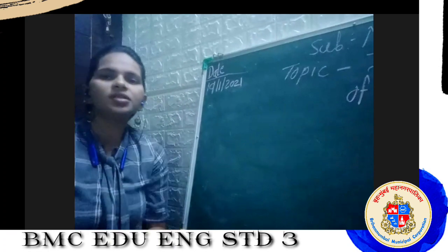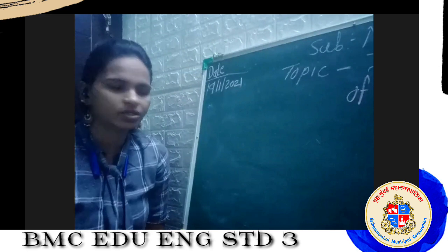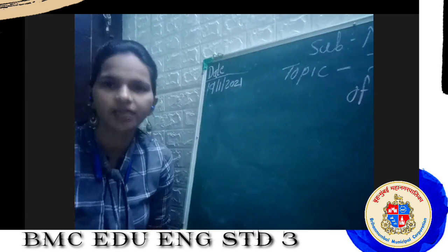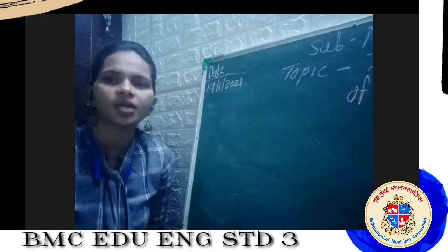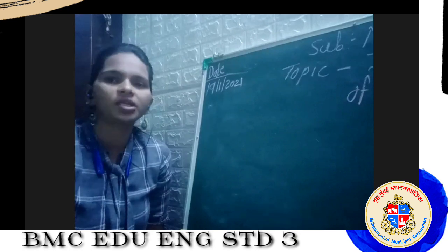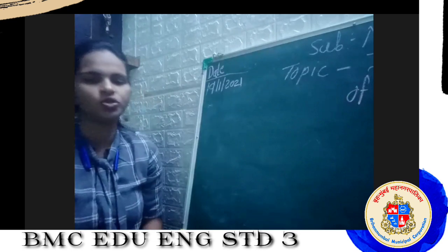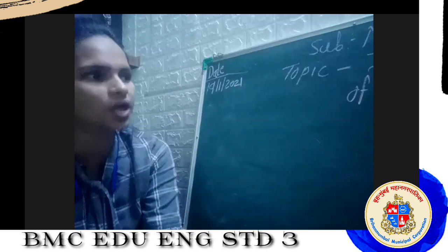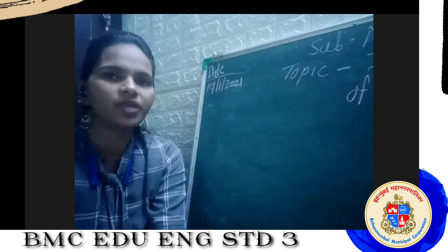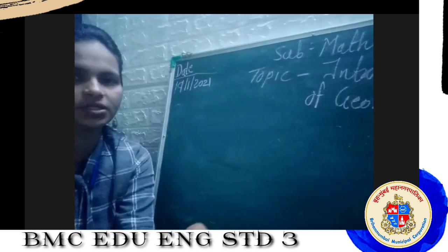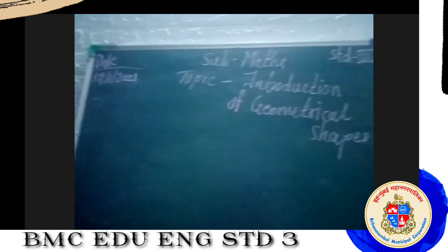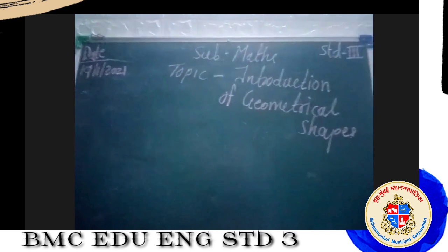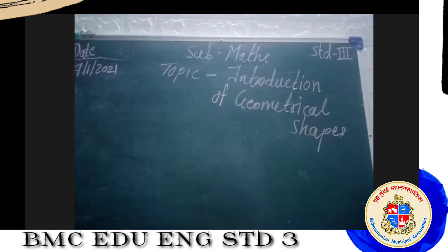All these shapes we have learned in the previous standard — in second standard we learned about shapes. So now these shapes — triangle, rectangle, circle — are known as geometrical shapes. Today we are going to learn about geometrical shapes but we will add a few more points. Our topic name is 'Introduction of Geometrical Shapes.' We will start with the quadrilateral.